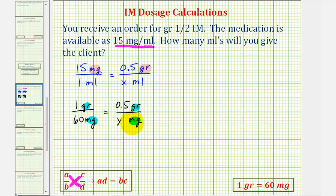When cross multiplying we'll leave off the units. So 1 times Y equals 60 times 0.5, or 60 times 1 half would be 30. Since Y equals 30, 0.5 grain is equal to 30 milligrams.